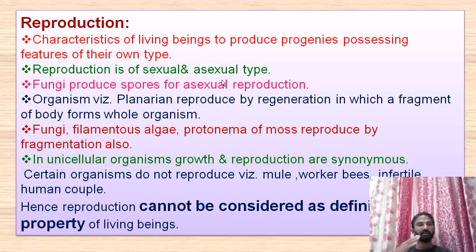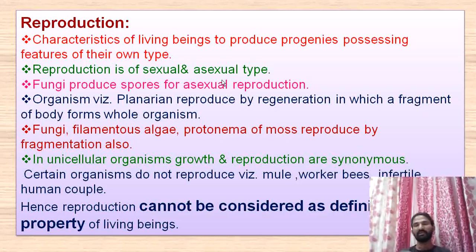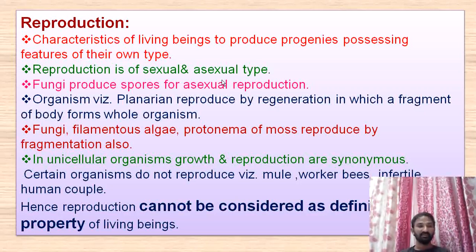Fragmentation means filamentous algae or protonema of moss or fungal mycelium is cut into small pieces and each piece develops as a new organism. For example, filamentous algae cut into small pieces — each piece has the capability to produce the whole filament. You observe fungi in daily life: when a coconut is placed in your home, after a few days you observe black, white, and green colour spots on the surface of the endosperm — that is nothing but fungi growing on the coconut, reproduced by fragmentation.